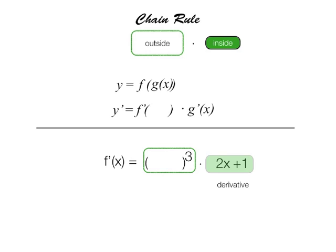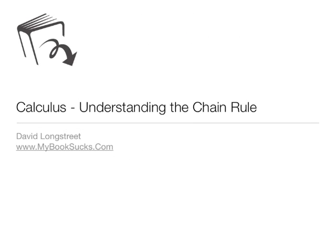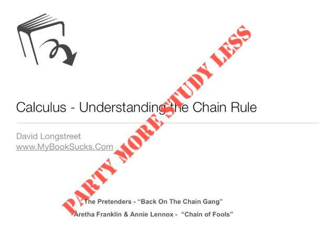If you're having a hard time for motivation, learning the chain rule, I'd recommend two songs. The first song is the Pretender's Back on the Chain Gang, which is a great song from the 80s or 70s. The other one is Aretha Franklin and Annie Lennox, and it's Chain of Fools. Both of these should help you get through the class, give you some motivation.